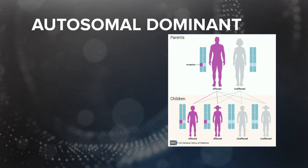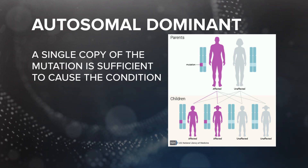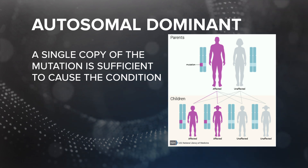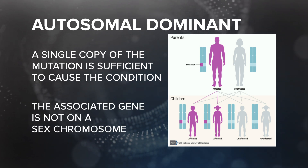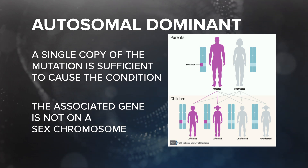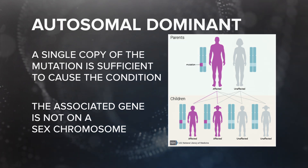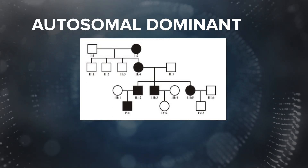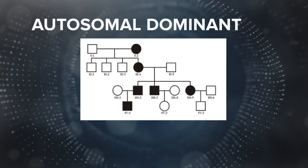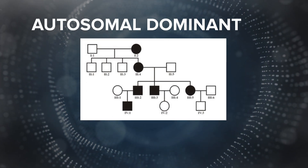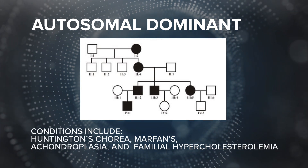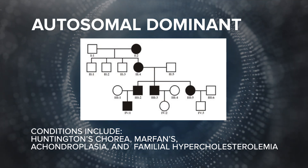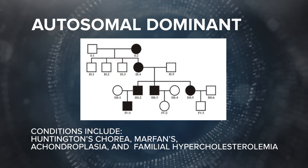If the condition associated with the gene is observed when an individual has only one copy of a mutation in the gene, then the allele is dominant. An autosomal gene refers to a gene on any of the chromosomes 1 through 22, the autosomes, not on either of the sex chromosomes. Autosomal dominant conditions are often seen in every generation of a family history, as shown in the pedigree here. Conditions that follow an autosomal dominant pattern of inheritance include Huntington's chorea, Marfan's, achondroplasia, and familial hypercholesterolemia.